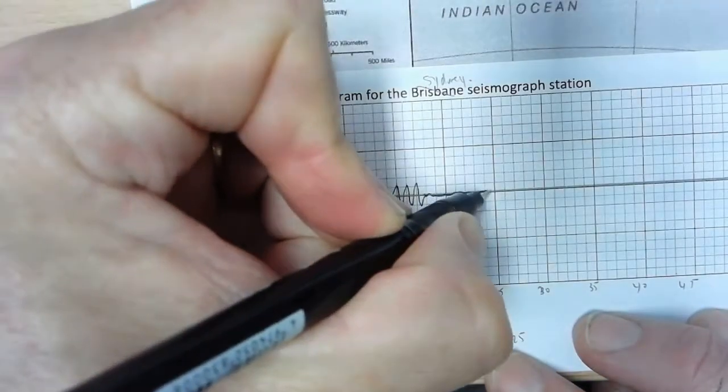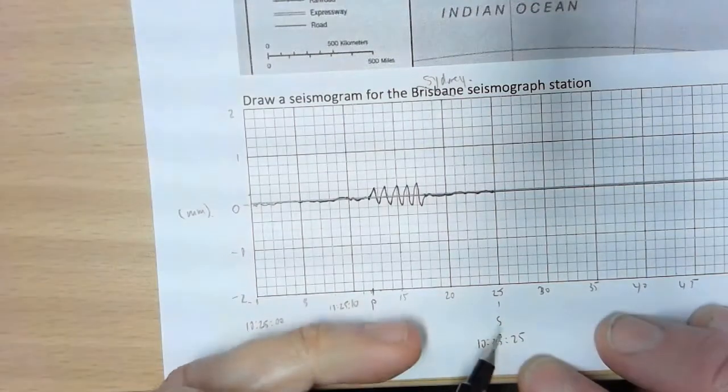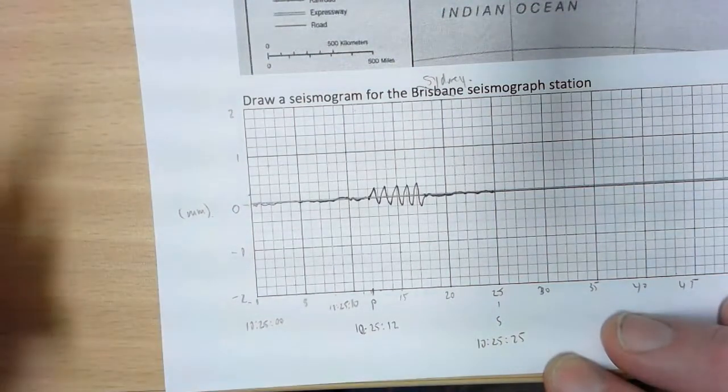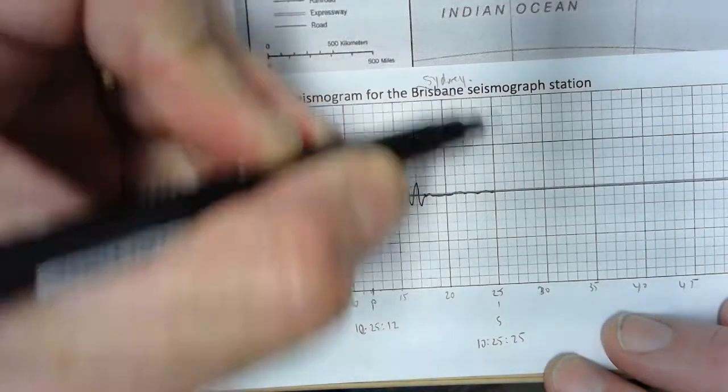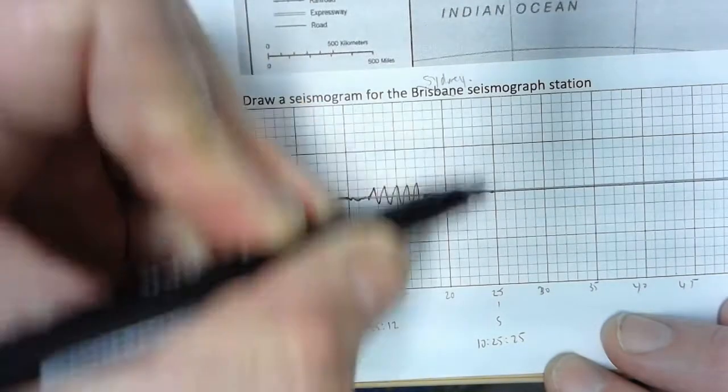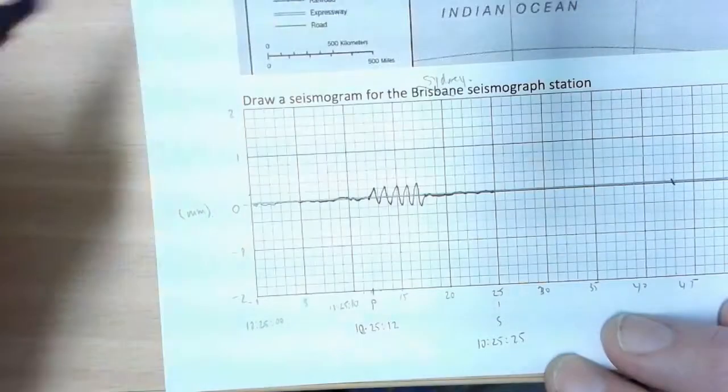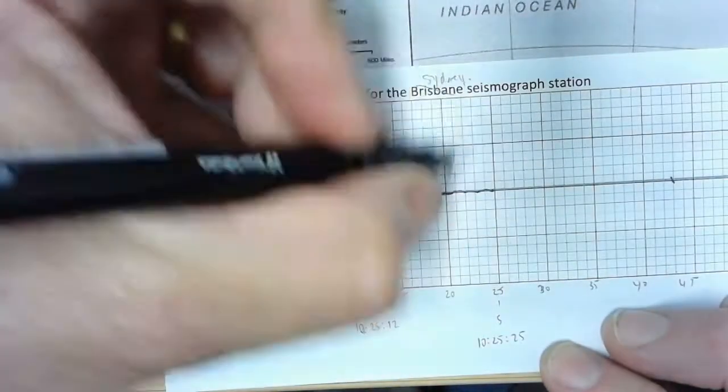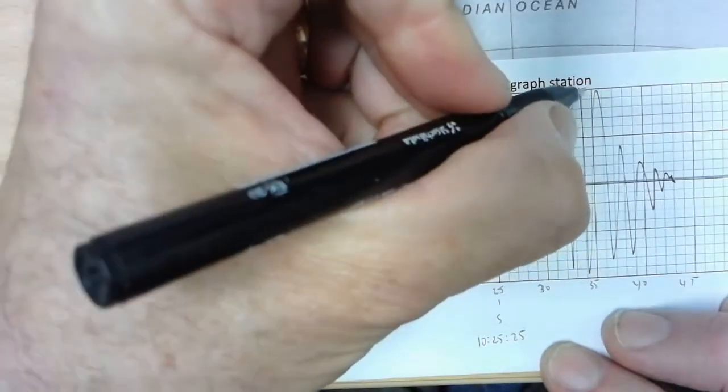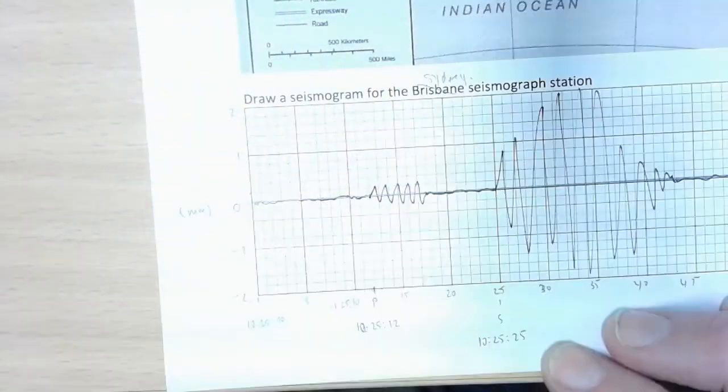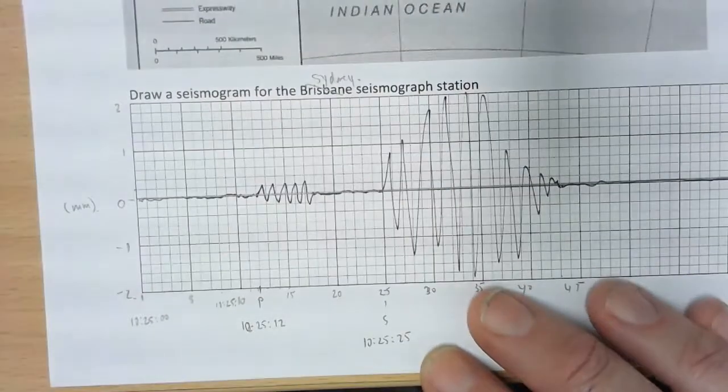And then it goes flat again until 10:25:25 when we've got our S wave. Now, the S wave, remember, has a maximum magnitude of 2 millimeters up and down. Let's just decide on the spot we're going to stop the S wave shaking. And now we really let rip. We need to make sure we hit that maximum. And then, of course, it's just going to go off again. So that's all we can do.